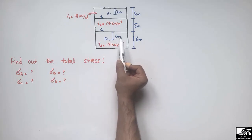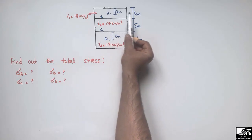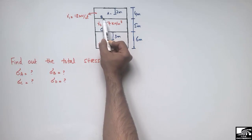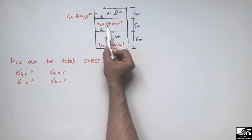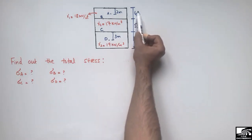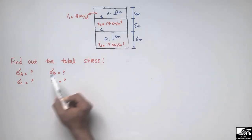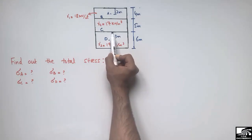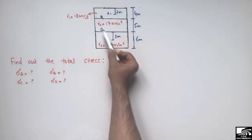We have to find the stress at point A, which is 2 meters from the top of the soil; at point B, which is 4 meters from the top and at the bottom of the first layer; at point C, which is at the bottom of the second layer, 9 meters from the top; and at point D, which is 3 meters below the bottom of the second layer.